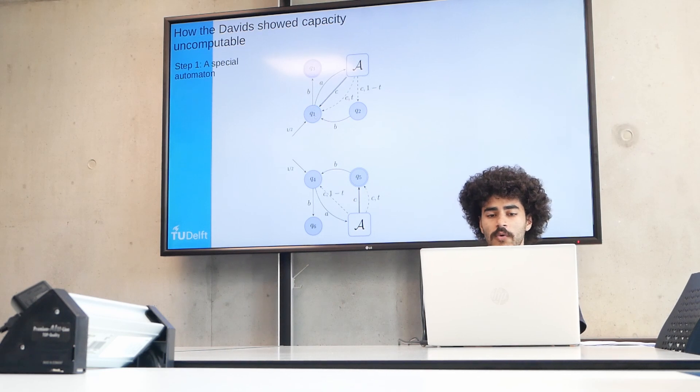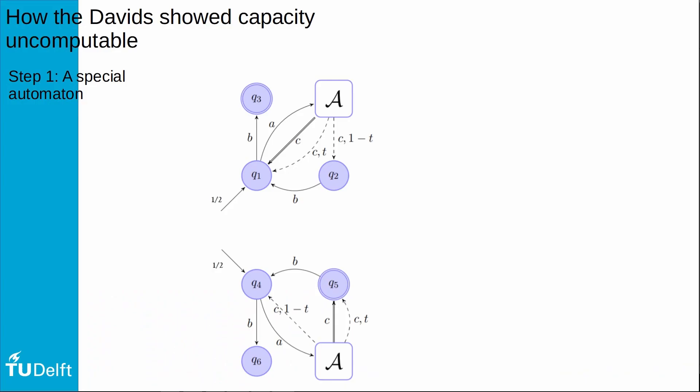So if the automaton is in the state Q1 and it reads the symbol B, it will go to the state Q3. If it's in the state Q1 and it reads the symbol A, it will transition to this block A here. And these transitions are probabilistic. So if it's in the block A and it reads the C, it goes to the state Q2 with probability 1 minus T. And if it's in A and it reads C, it goes to Q1 with probability T.